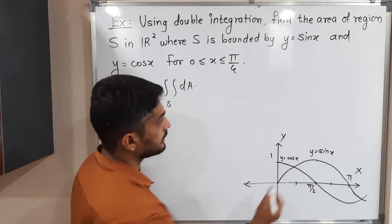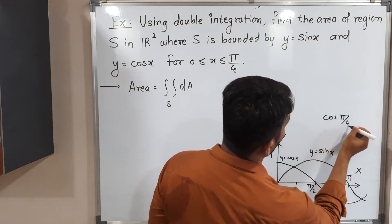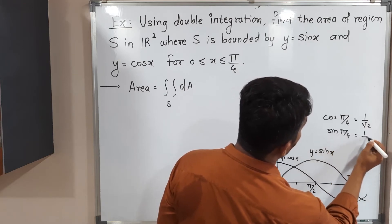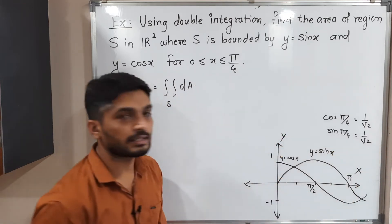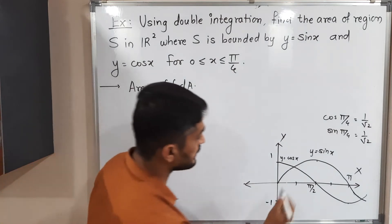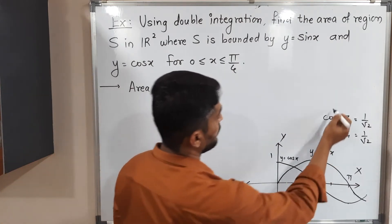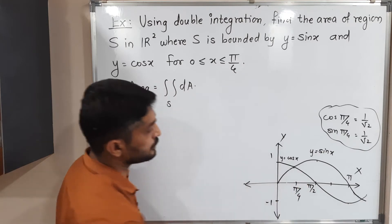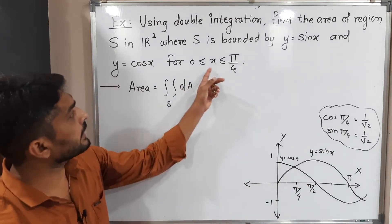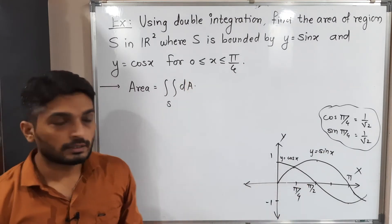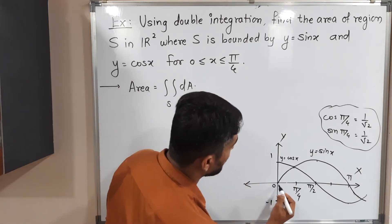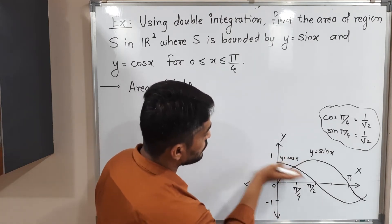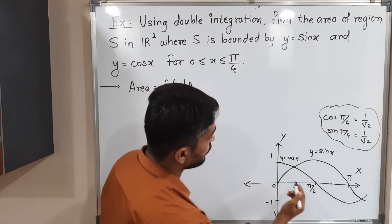cos(π/4) = 1/√2 and sin(π/4) = 1/√2, meaning cosine and sine have the same value at π/4. So the point of intersection is at x = π/4. After that, x varies from 0 to π/4 — meaning we take the region for this part only, bounded by the cosine curve and the sine curve.